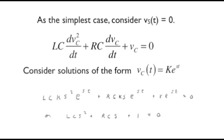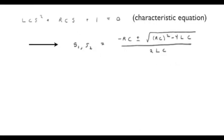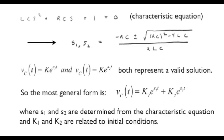Substituting k e to the st for the capacitor voltage, we obtain an s squared from the second derivative term, we obtain an s from the first derivative, and dividing both sides through by k e to the st, we are left with a quadratic equation for s: LC s squared plus RC s plus 1 equals 0. Using the standard quadratic equation solution, we obtain the two roots from minus RC plus or minus the square root of RC squared minus 4LC, all over 2LC.